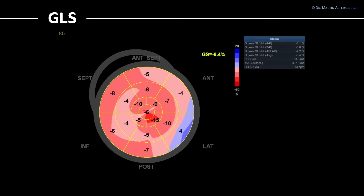Taking a closer look at the bullseye display, we see in the lateral wall a blue or bluish area — some parts even darker blue — indicating dyskinesia. The lighter red colors represent severe hypokinesia. Moving towards the apical segments, the red color becomes slightly darker. The highest value in this bullseye display is minus 15, which would be borderline or mildly reduced strain. So the typical apical sparing pattern seen in amyloidosis is not really present, though the apical segments do appear to contract a little more.